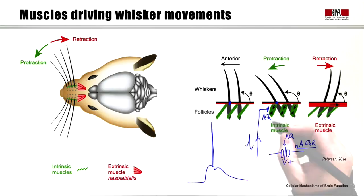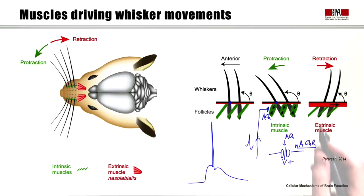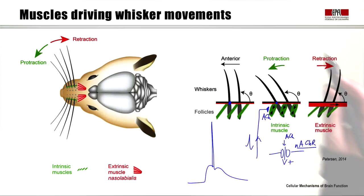Action potentials in the motor neurons drive muscle contraction and can move the whiskers forwards or backwards. The same is true across all muscles in our body — acetylcholine is the neurotransmitter at the neuromuscular junction.